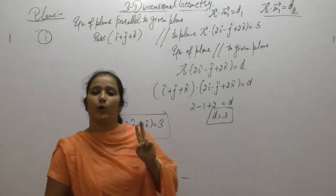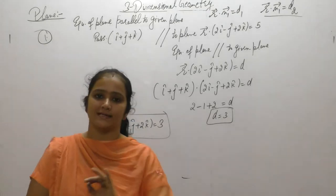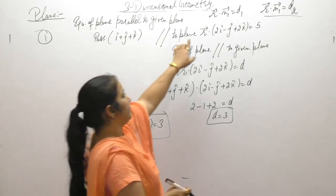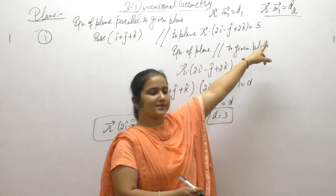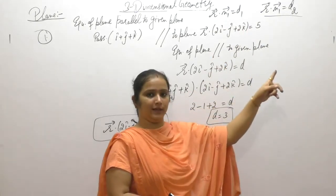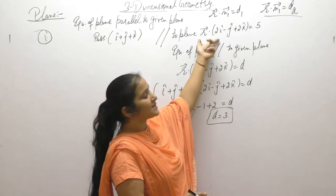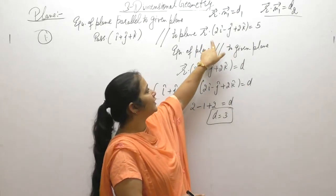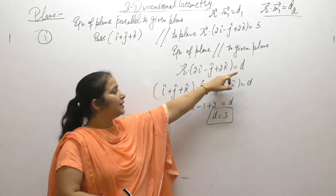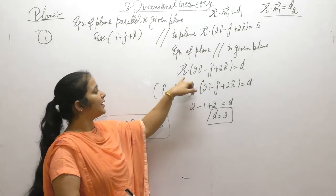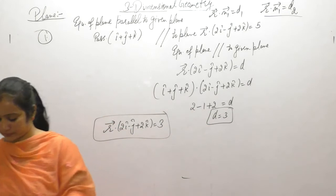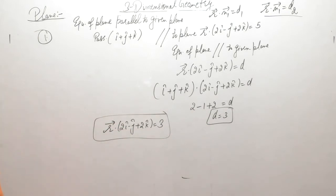To summarize: when two planes are parallel, only the constant term changes. The normal vectors n1 are the same; only d1 and d2 differ. To find the parallel plane, keep the same normal and substitute the given point for r to find the new constant d.